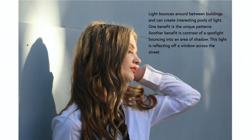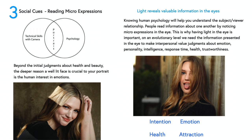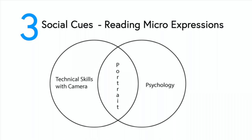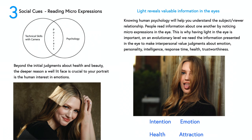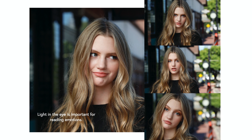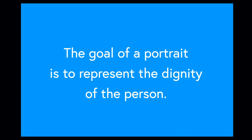This light is reflecting off a window across the street. Social cues: reading micro-expressions. Beyond the initial judgments about health and beauty, the deeper reason a well-lit face is crucial to your portrait is the human interest in emotions. Think of it as a Venn diagram — technical skills with a camera and psychology add up to a portrait. Light reveals valuable information in the eyes. Knowing human psychology will help you understand the subject-viewer relationship. People read information about one another by noticing micro-expressions in the eye. This is why having light in the eye is important — we need that information to make interpersonal value judgments about emotion, personality, intelligence, response time, health, and trustworthiness. Light in the eye is important for reading emotions. The goal of a portrait is to represent the dignity of the person.